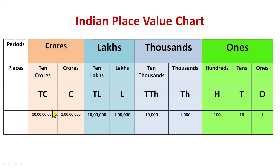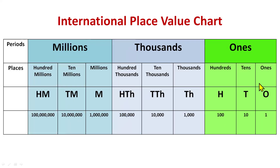So this is the Indian place value chart — in the ones period we have three places, thousands has two places, lakhs has two places, and crores has two places. Now let's revise the international place value chart.